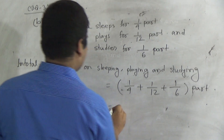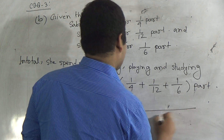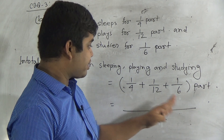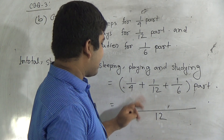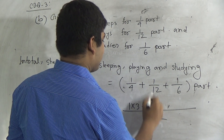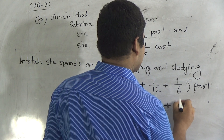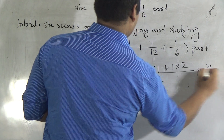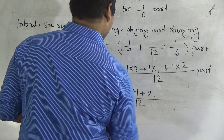Please notice the board. We need to find the LCM of 4, 12 and 6. Since 4 and 6 are factors of 12, the LCM is 12. We divide 12 by 4 and get 3, multiplied with numerator 1. Then 12 divided by 12 gives 1, multiplied with 1. Then 12 divided by 6 gives 2, multiplied with numerator 1. So we have 3 ones are 3, 1 one is 1, and 2 ones are 2, all over 12.